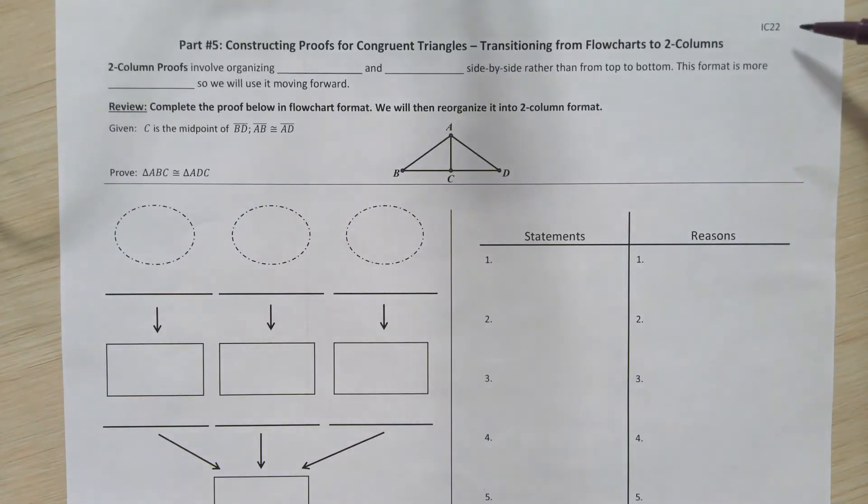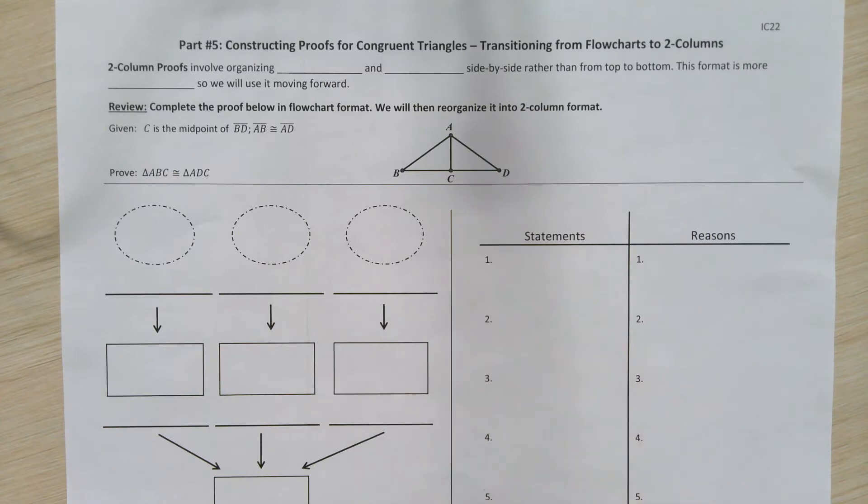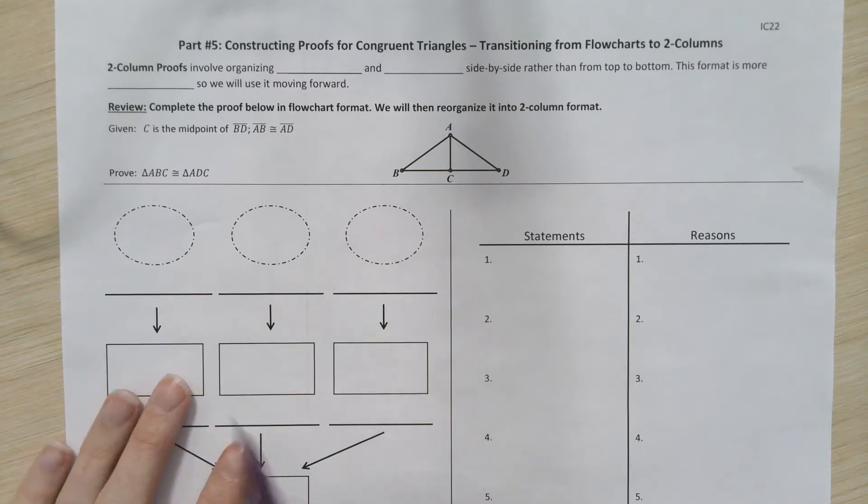For today's video, you'll need in-class 22. This is the day where we are going to take our flowchart proofs that we've been writing for congruent triangles and transition over into our official two-column format. This is going to be what your problems will look like when you eventually take your assessment over this topic. So, to get us started, let's talk a little bit about two-column proofs.